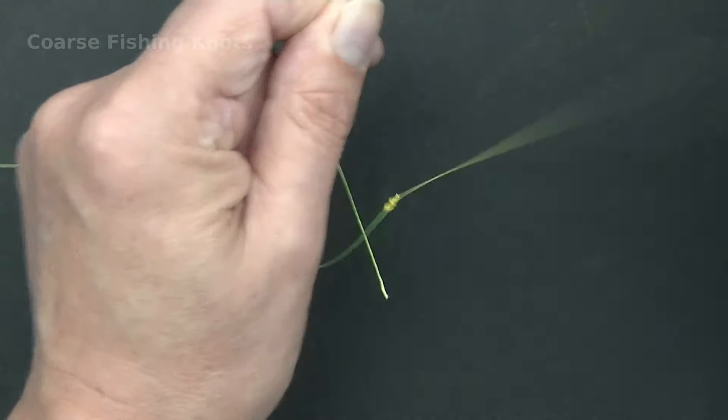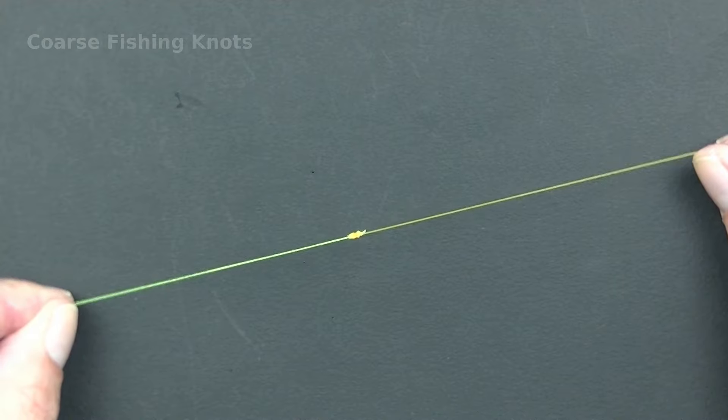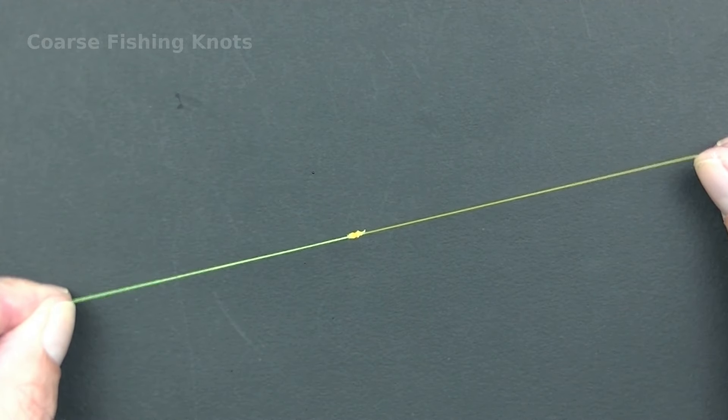Cut off the tail ends close to the knot. Thank you for watching and best of luck with your fishing.